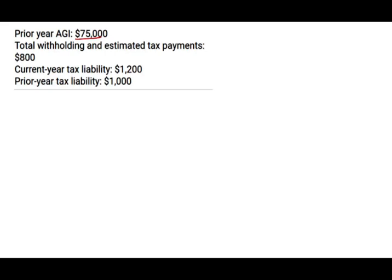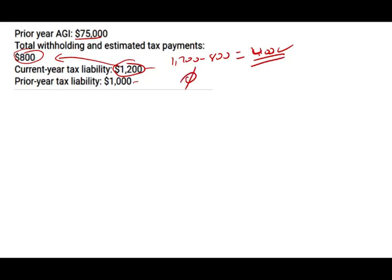Example one: prior year AGI is $75,000. Total withholding and estimated tax this year is $800. Current tax liability is $1,200. Prior year tax liability is $1,000. First, determine if the amount owed is more than $1,000: $1,200 minus $800 equals $400 short. Since I'm short less than $1,000, the underpayment penalty is zero — I don't have to worry because I'm short only $400.